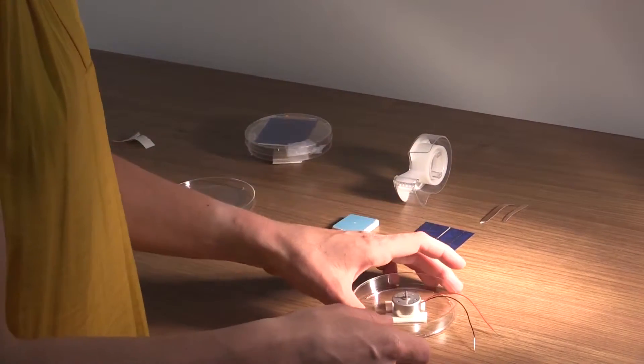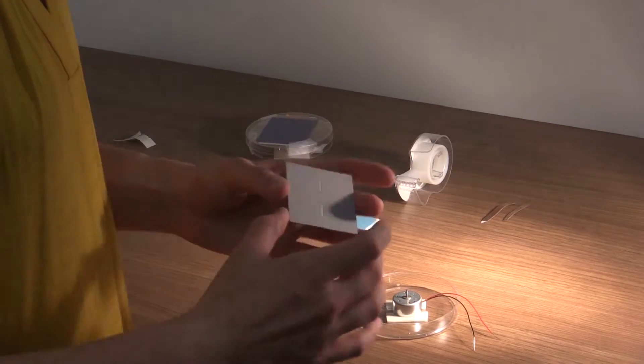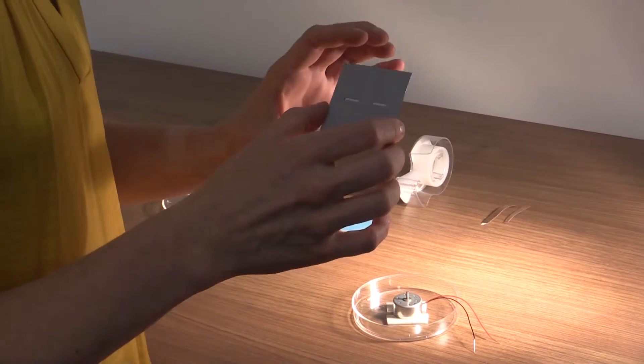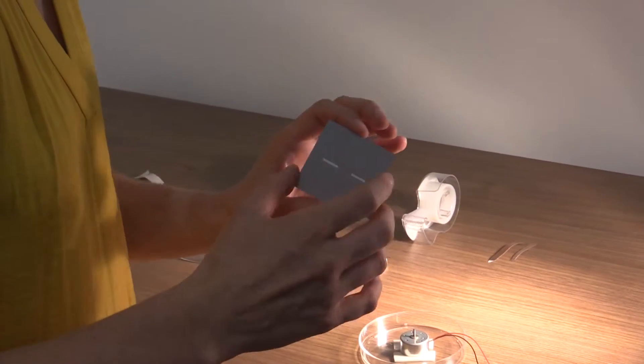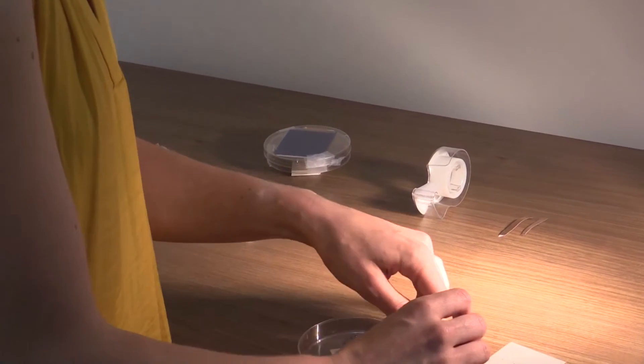Now we're going to attach the black wire to the back of the solar panel. You'll notice these two white pieces on the back gray side are the contacts we're going to attach to. You only have to attach to one of the contacts.